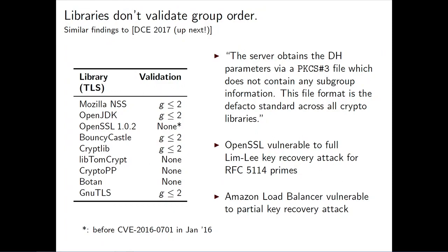Turning our attention to TLS libraries: in TLS it's not possible for the server to send the subgroup order to the client, so the client has no hope of doing validation beyond the simple check 2 ≤ y ≤ P-2. However, servers should know which groups they're serving and which subgroups to expect the client's value to be in, so they should be able to do these checks. One vendor told us during disclosure that the server obtains DH parameters via a PKCS#3 file, which does not contain any subgroup information — and this file format is the de facto standard across all crypto libraries. For all TLS libraries examined, we didn't see anyone doing this additional validation.